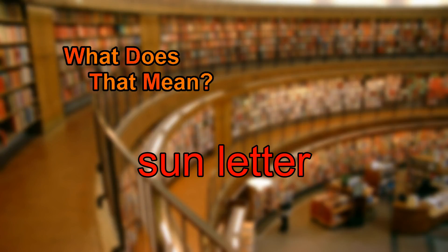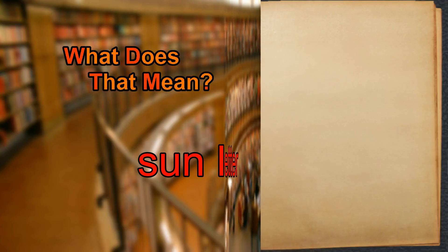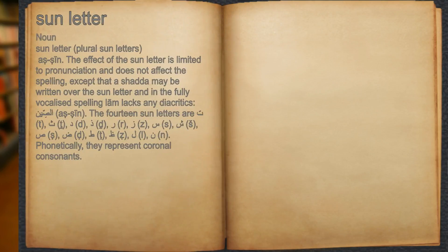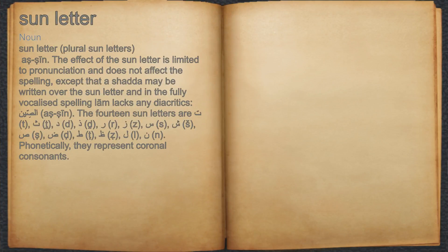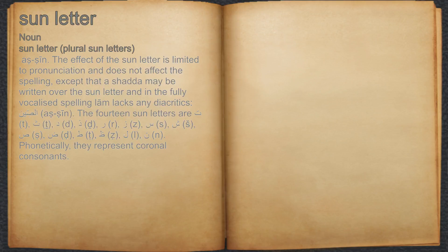What does sun letter mean? Sun letter. Noun. 1. Linguistics: one of 14 Arabic letters that cause the L of a preceding definite article, Al, to be assimilated in pronunciation.